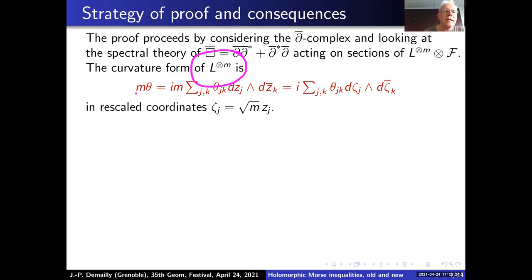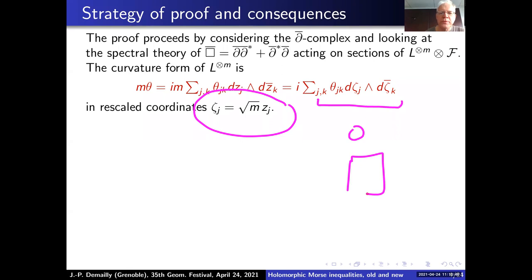Then you do a localization. The curvature of L^⊗m is m times theta. You rescale coordinates by the square root of m, so you have to look at very small cubes of size one over square root of m. Locally, theta is smooth and doesn't vary much, so asymptotically you can consider the curvature to be constant. When everything is constant, you are reduced to computing on C^n, where you have a model case and can compute all eigenfunctions and eigenvalues. This localization idea gives the result — it's not very hard.